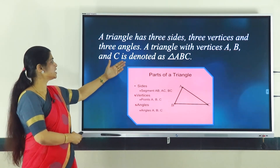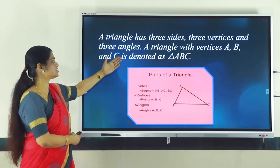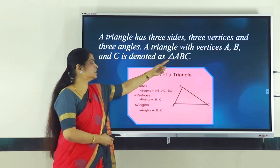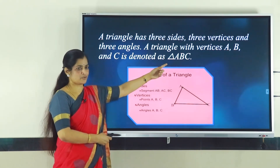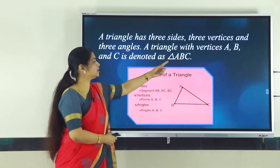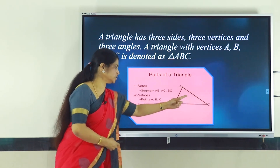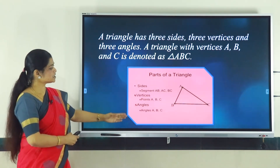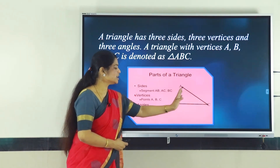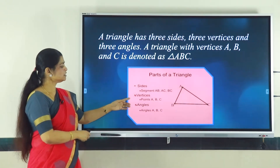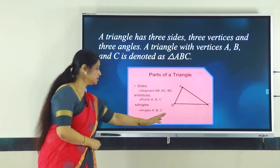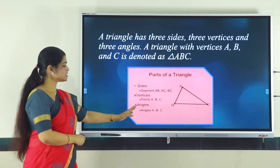A triangle with vertices A, B and C is denoted as triangle ABC. This symbol is a Greek alphabet called delta. The three line segments are AB, BC and AC. The vertices are points A, B and C, and the angles are angle A, angle B, angle C.